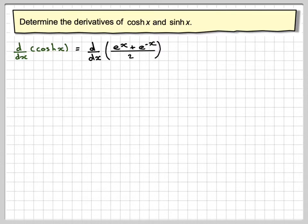If you differentiate e to the x, you get itself. And if you differentiate e to the minus x, you get minus e to the minus x. And these will still be over 2.